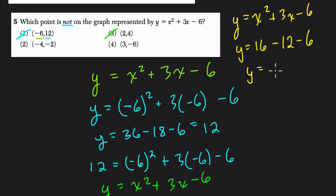y would equal 4 minus 6 or negative 2. So the input is negative 4, the output is negative 2. It is a point on this function.